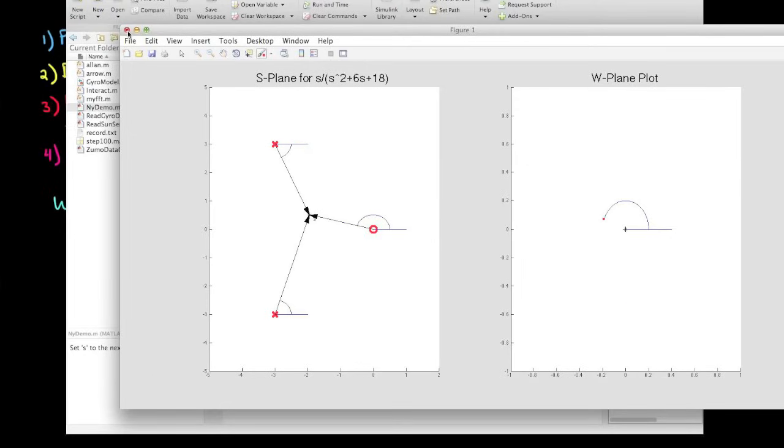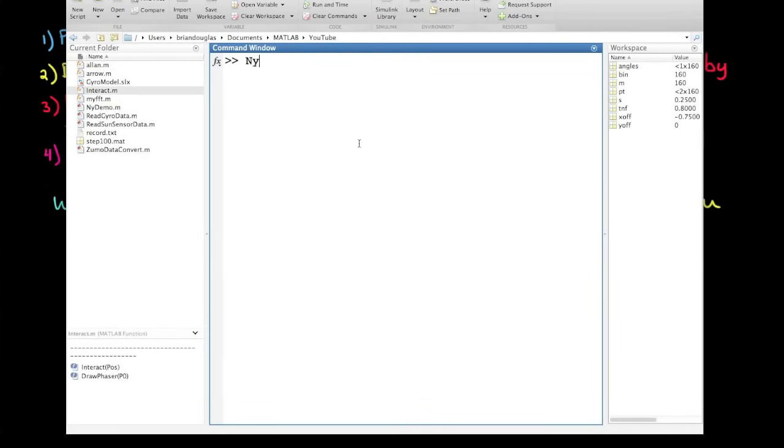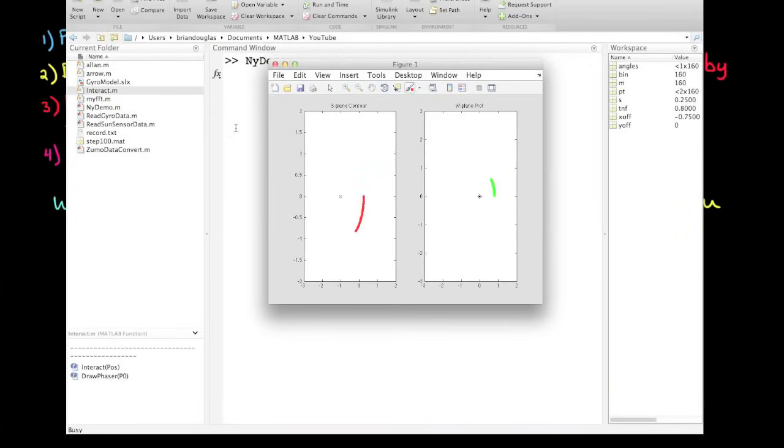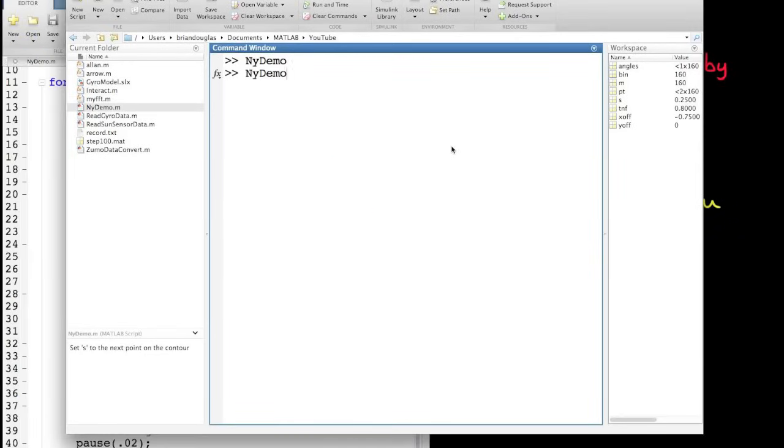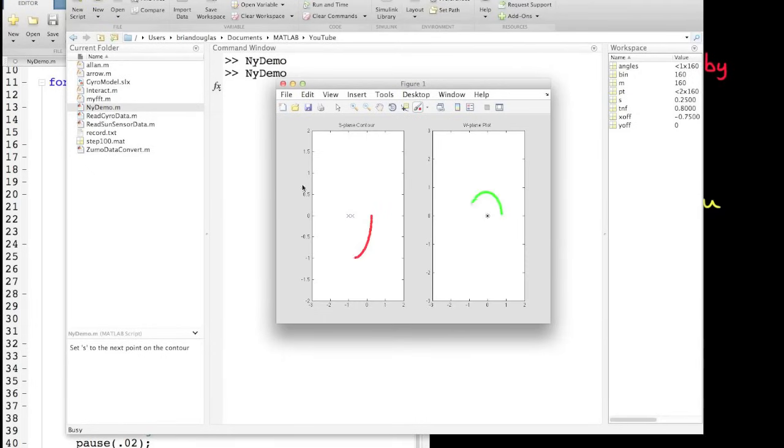Now I've written a second demo that might make this a little bit easier to see. Here I have a single pole that I encircle, and the resulting plot circles the origin one time in the counterclockwise direction since we're subtracting 360 degrees of phase. Now I'll add a second pole and rerun it. And as you can see, there's going to be two rotations around the origin, one for each pole.